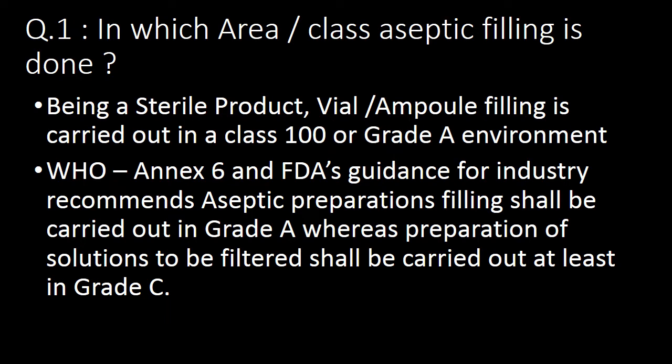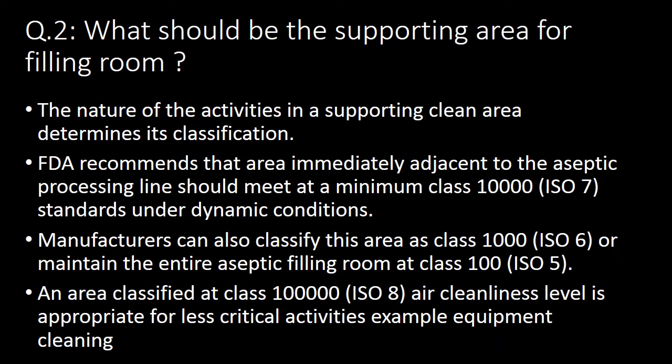First, a very basic question: in which area or class is aseptic filling done? Aseptic sterile product vial or ampoule filling is carried out in a Class 100 or Grade A environment. WHO Annex 6 and FDA guidance for industry recommends aseptic preparations filling shall be carried out in Grade A, whereas preparation of solutions to be filtered shall be carried out at least in Grade C.